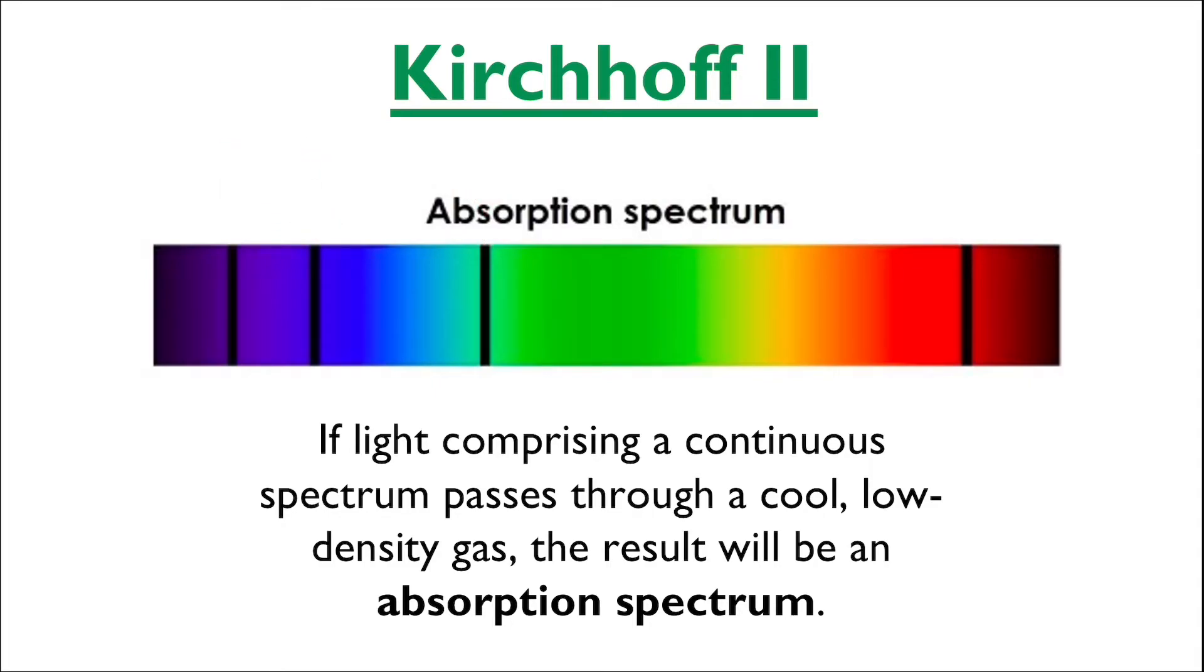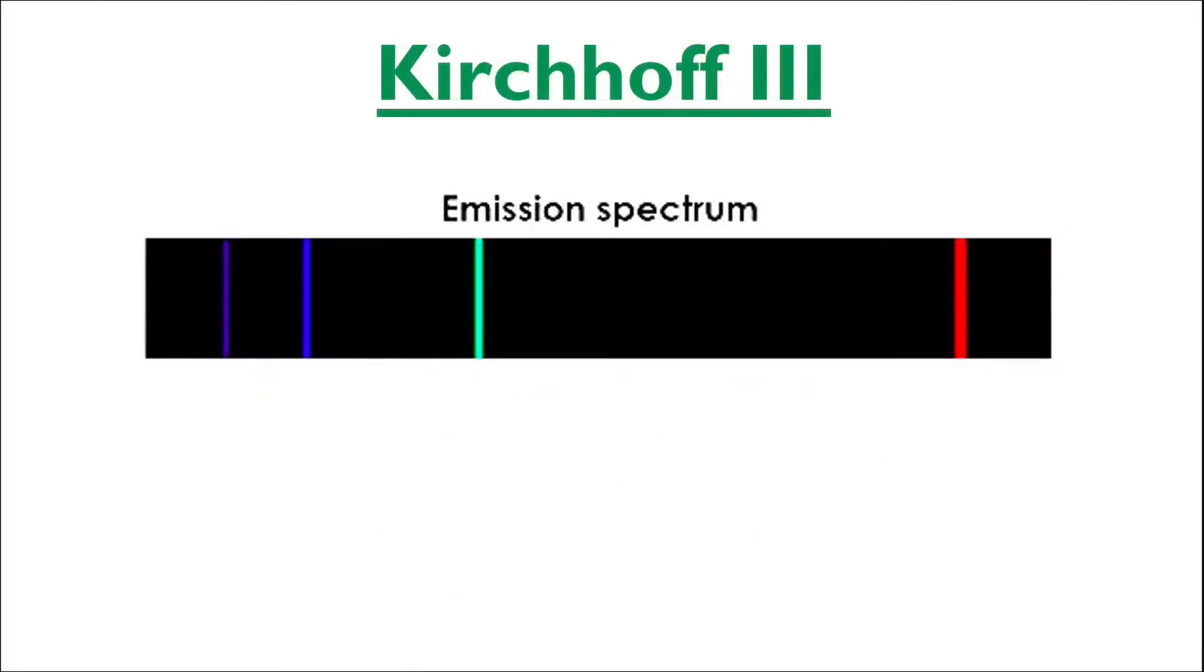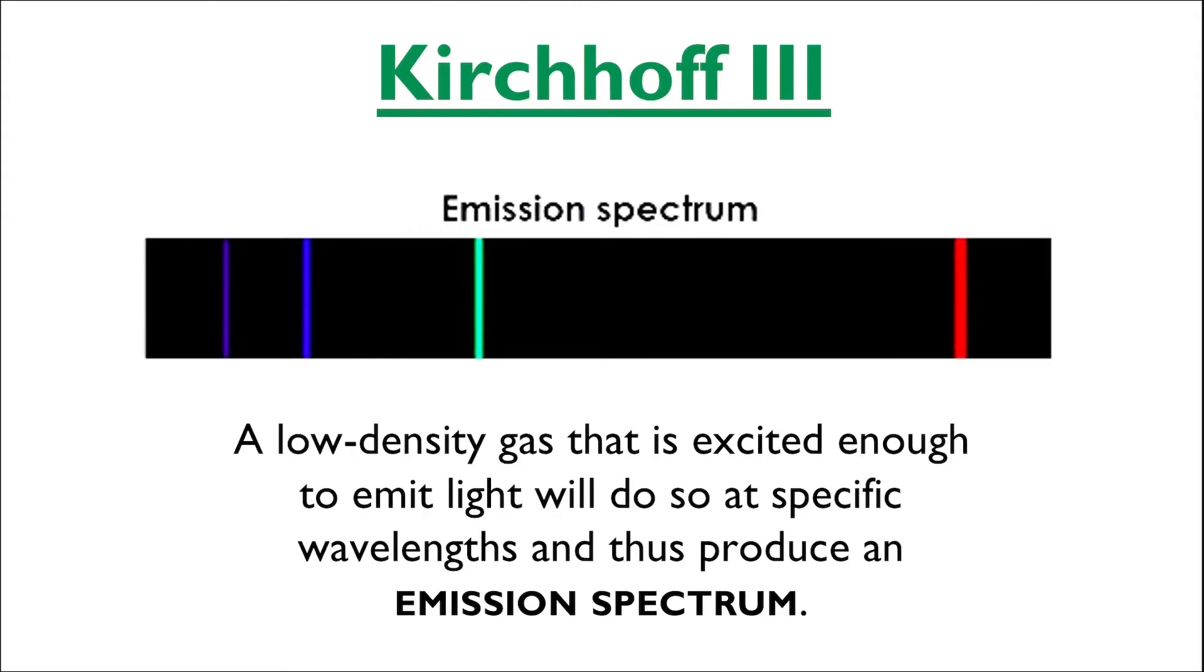The last type of spectrum is one in which there are practically no wavelengths to be seen, except for a few spectral lines here and there in front of a blank background. This type of spectrum results from a low-density gas, the same type as the one involved in the creation of the absorption spectrum, that gets excited enough to emit light at specific wavelengths only, giving us an emission spectrum as a result.